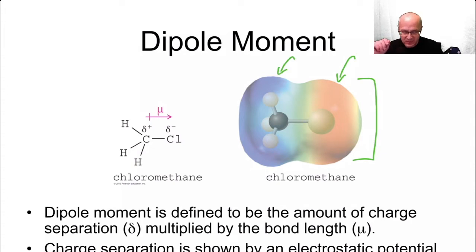So now if you take a look at this right here, you'll see the symbol delta negative and delta positive. That means slight positive charge, slight negative charge on that bond.